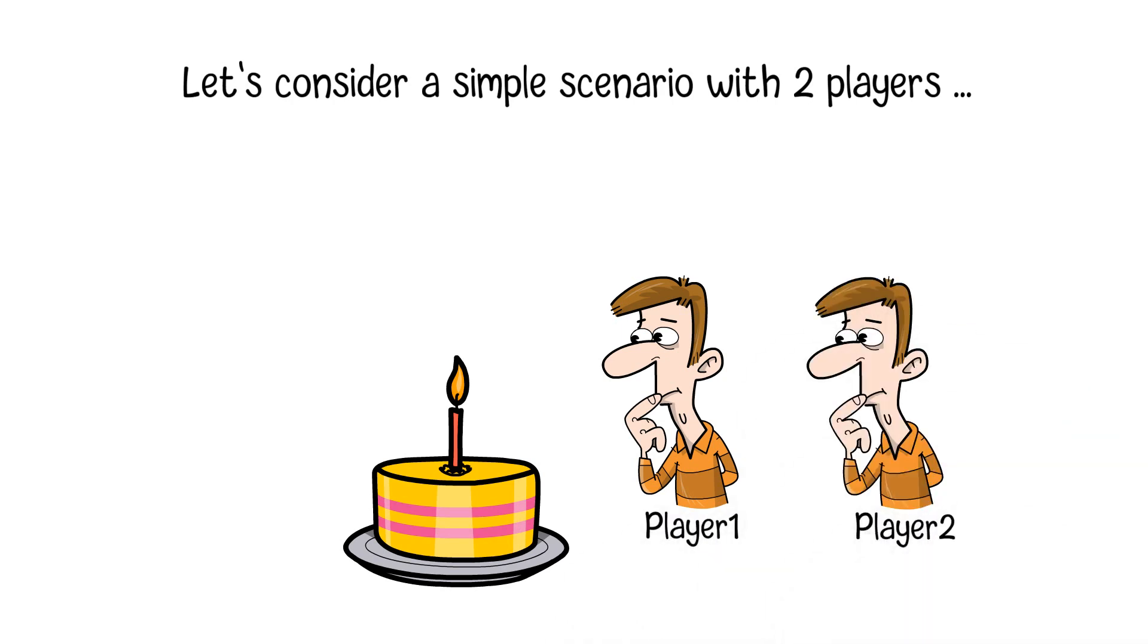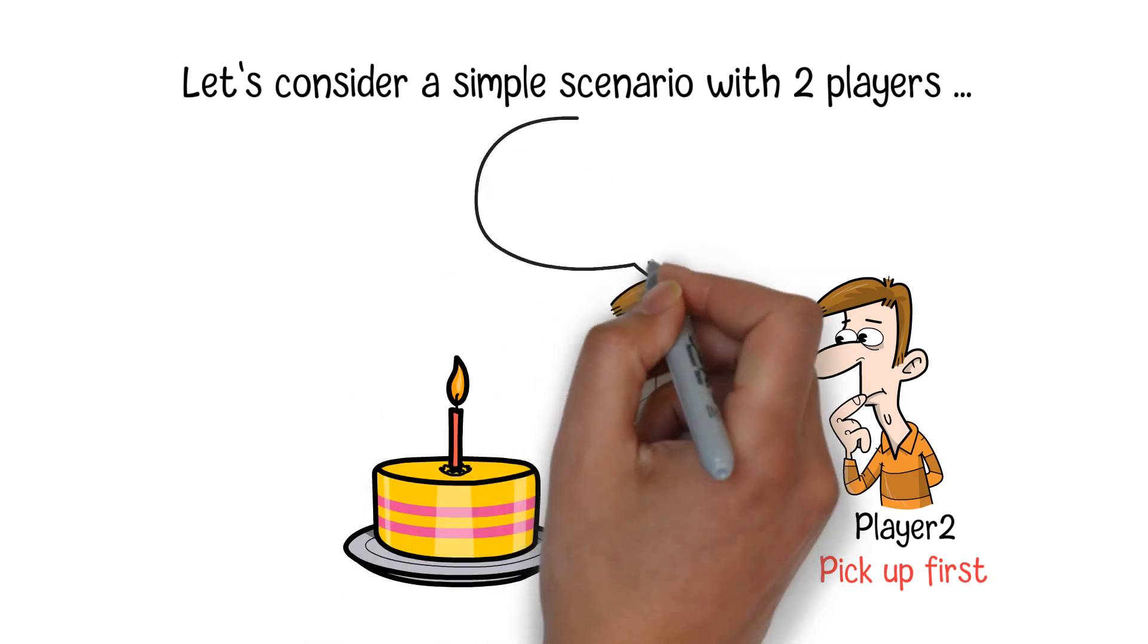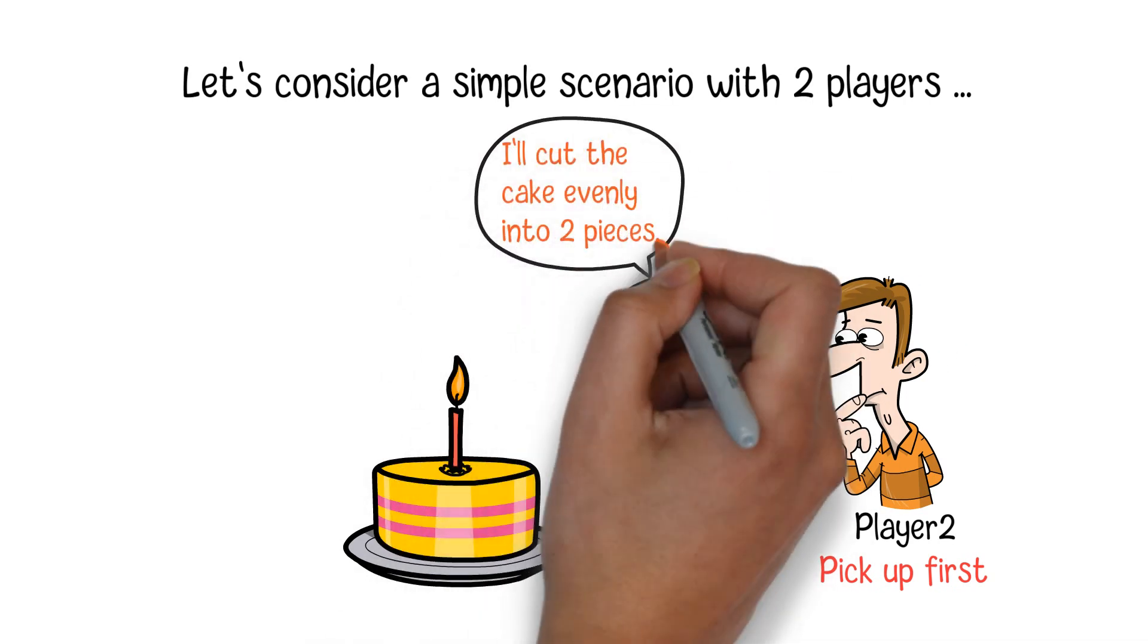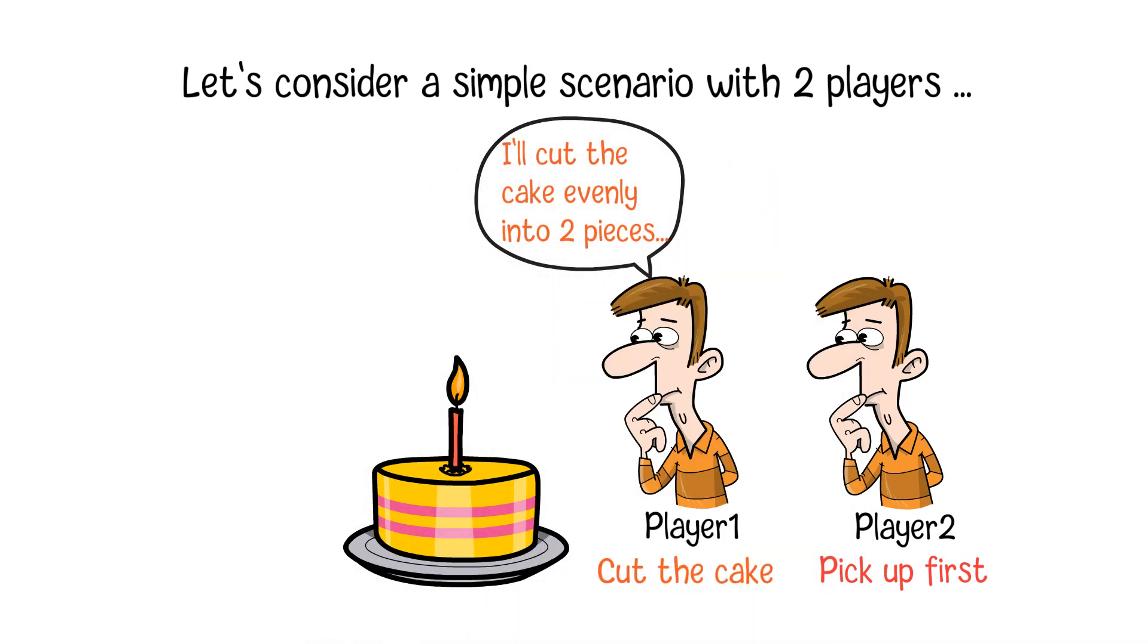The simple solution will be that player 1 cuts the cake and player 2 will do the pickup first. Since player 2 will pick up first, player 1 will honestly divide the cake evenly into two pieces from his perspective. No matter which one player 2 takes, player 1 will believe that he gets one half of the cake and there will be no envy.